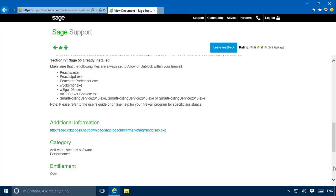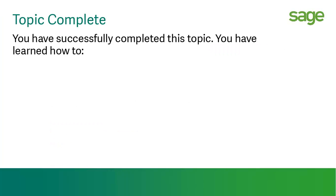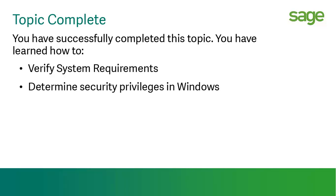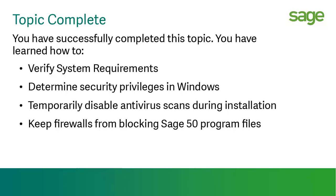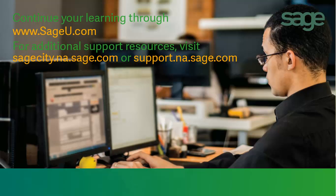And that's it. Following these pre-installation steps will help ensure a quick and trouble-free installation of SAGE50 accounting. You have successfully completed this anytime learning topic. You have learned how to verify system requirements, determine security privileges in Windows, temporarily disable antivirus scans during installation, and keep firewalls from blocking SAGE50 files. Thank you for taking this anytime learning topic. For information on additional training options available, please visit us at sageu.com.